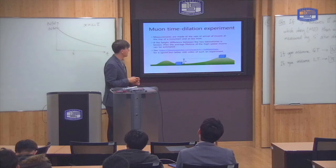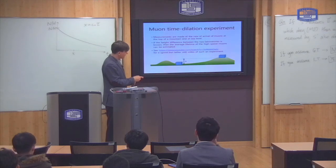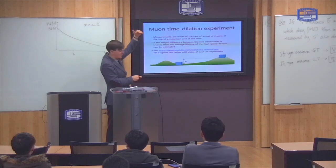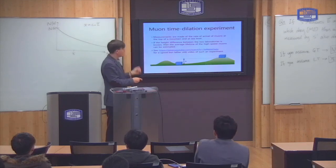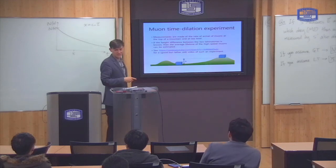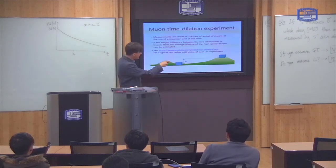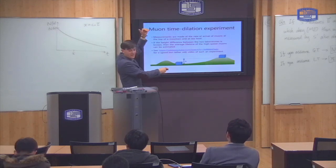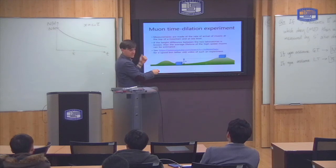So, specifically, the experiment works like this. They did an experiment in two different places, one which is at a certain height, about 2,000 meters up, I think, on top of a mountain, and one which is at sea level. Now, because the muons are coming down from the top of the atmosphere, and they are decaying, you would expect more muons to be detected here, and fewer muons to be detected here.